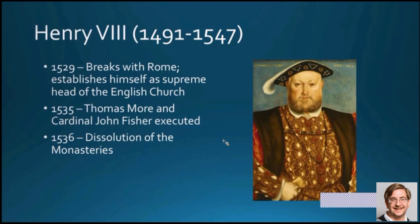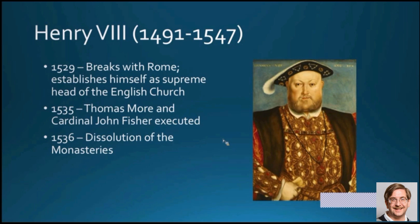For our purposes, it starts with Henry VIII. In 1529, Henry, who wanted to divorce yet another one of his wives and marry someone else, broke with the Church of Rome and established himself as the supreme head of the English Church. He had a couple of Catholics executed — Thomas More and Cardinal John Fisher — creating bad blood between the English monarchy and the Catholic Church. In 1536, he dissolved the monasteries, taking what treasures he could and closing them down.